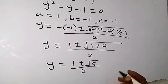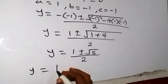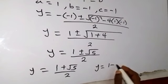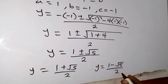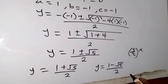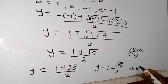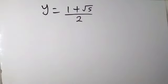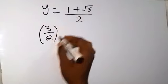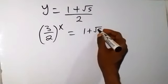So we have two solutions — one is plus and one is minus. We have y equals to 1 minus root 5 over 2. We don't have a solution here because our y is 3 over 2 raised to power x, which cannot be negative. Since this is negative, we reject this one — no solution. So we take the positive case: 3 over 2 raised to power x equals 1 plus root 5 over 2.